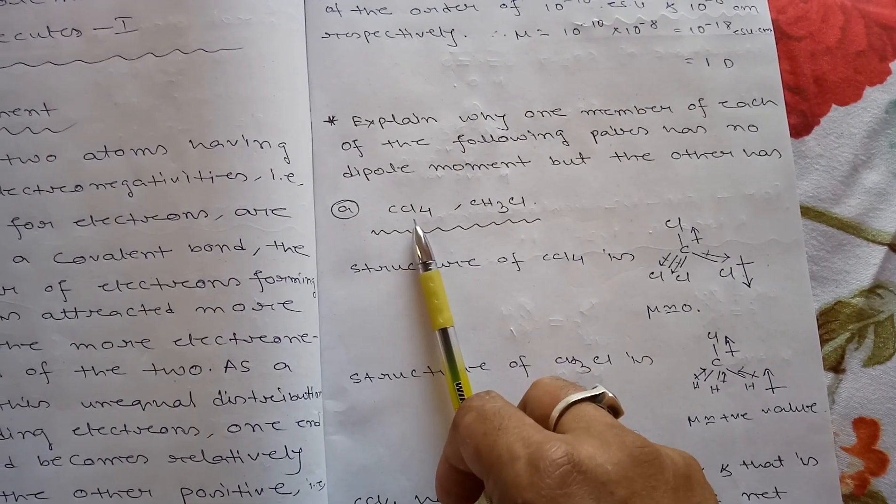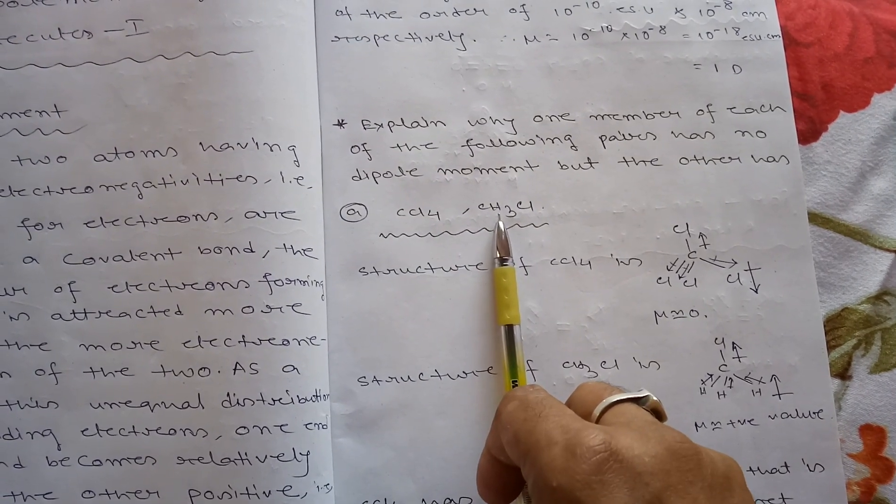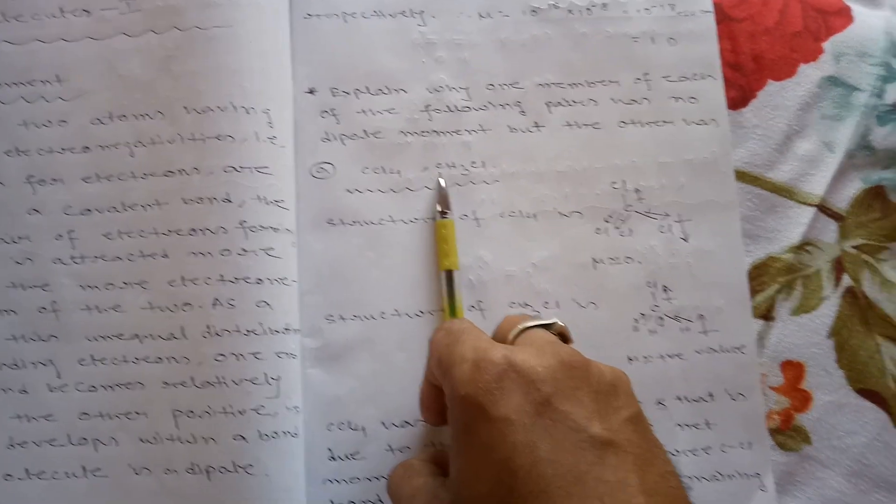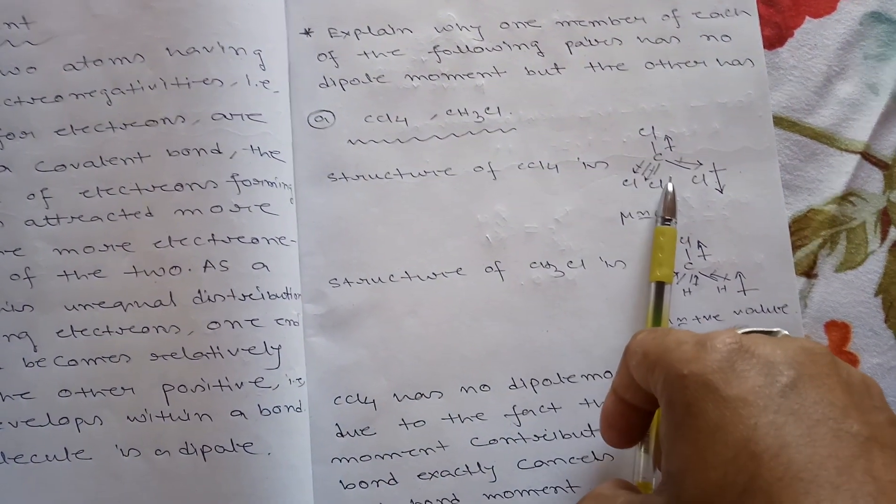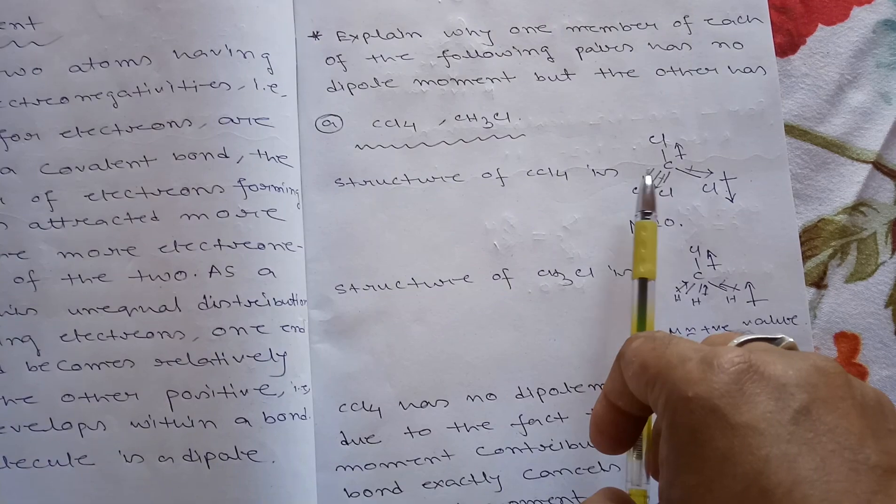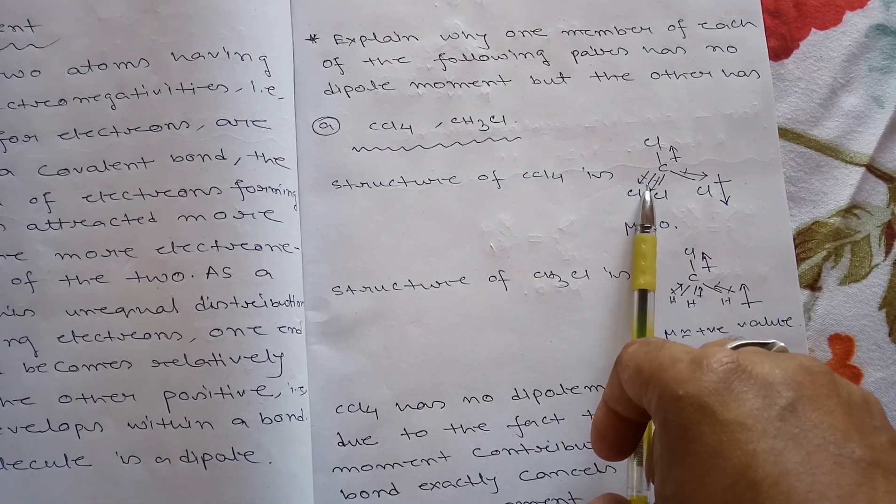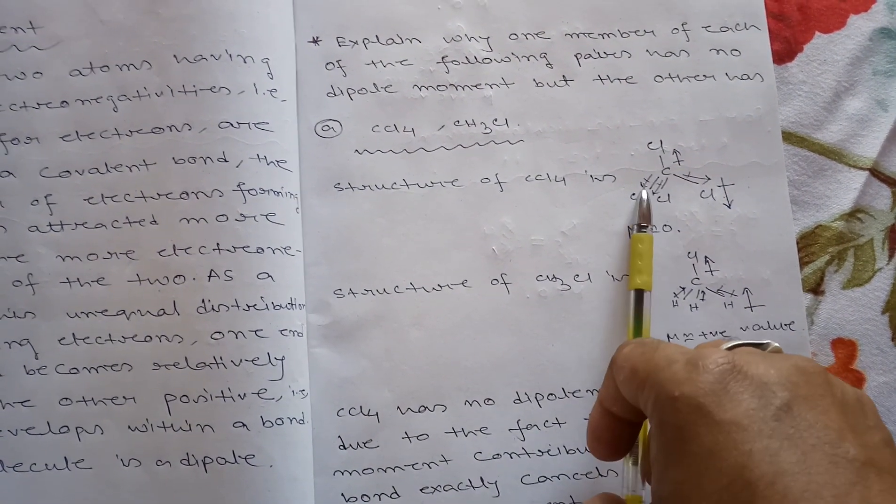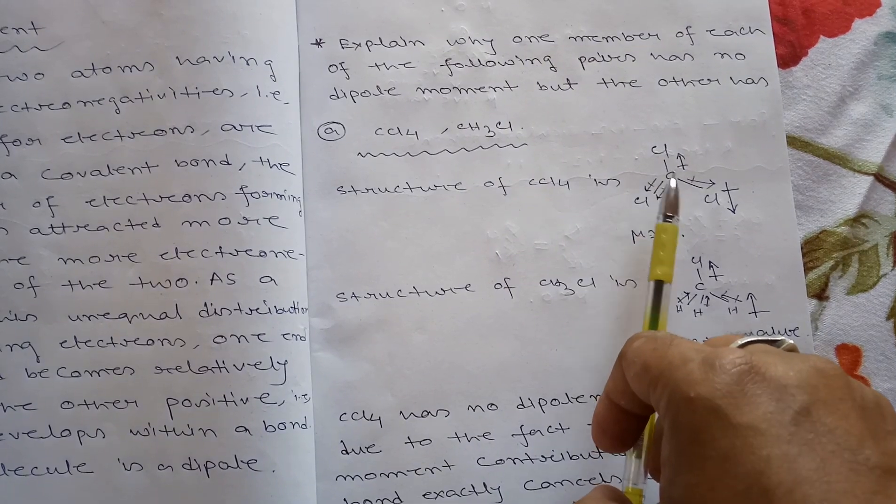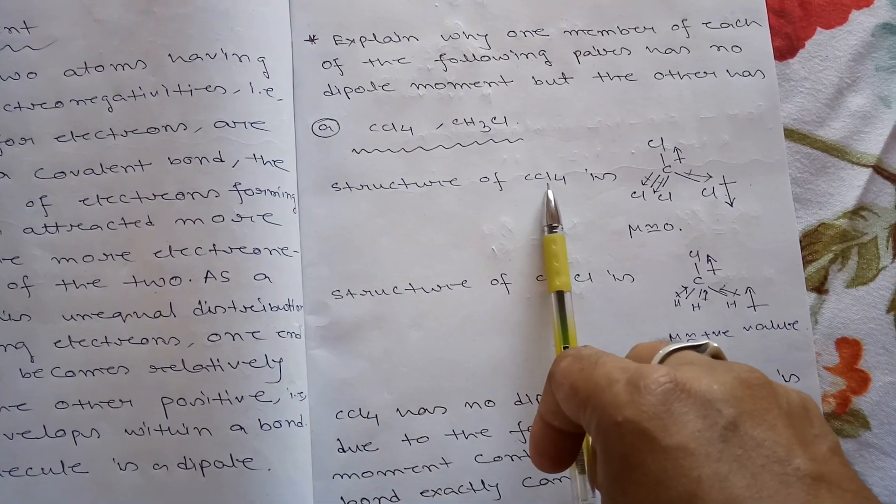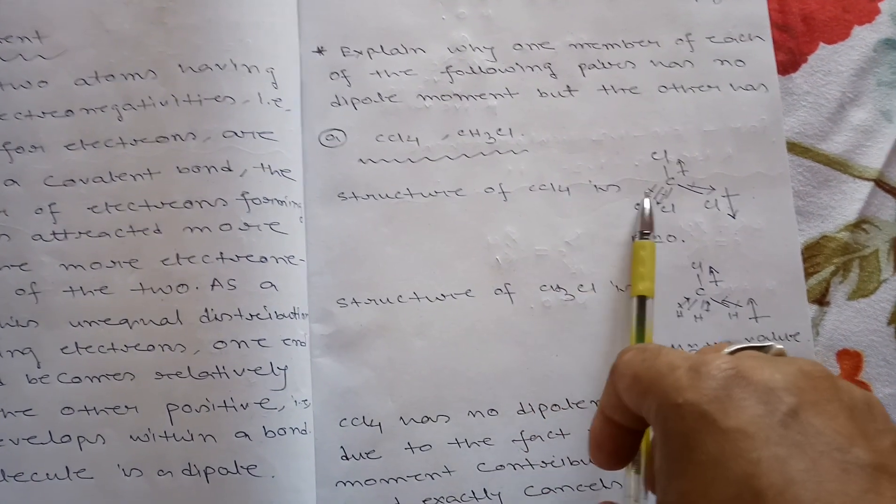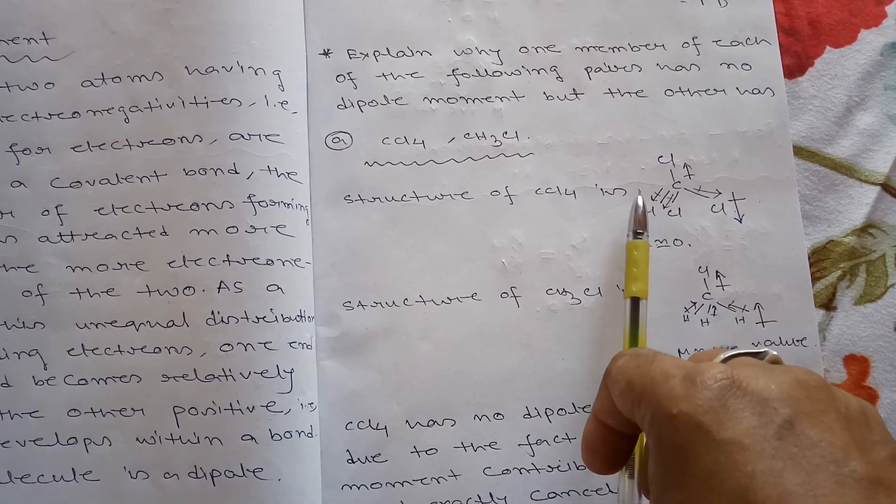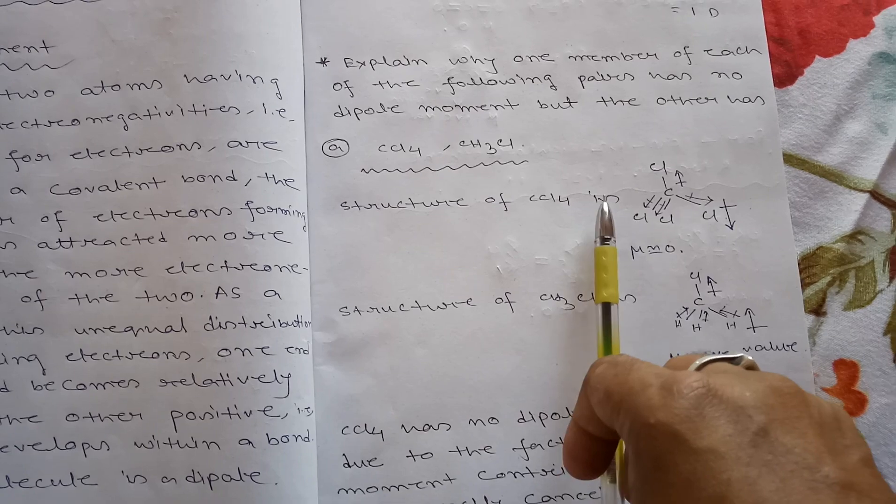First example: CCl4 and CHCl3. Now structure of CCl4 is this structure. This structure we draw from the value of hybridization, and from the value of hybridization we draw this structure.